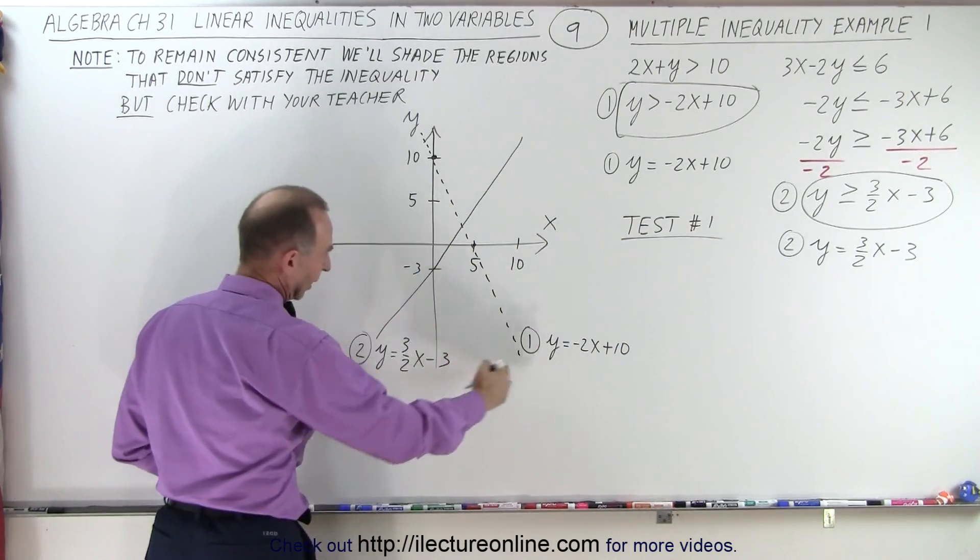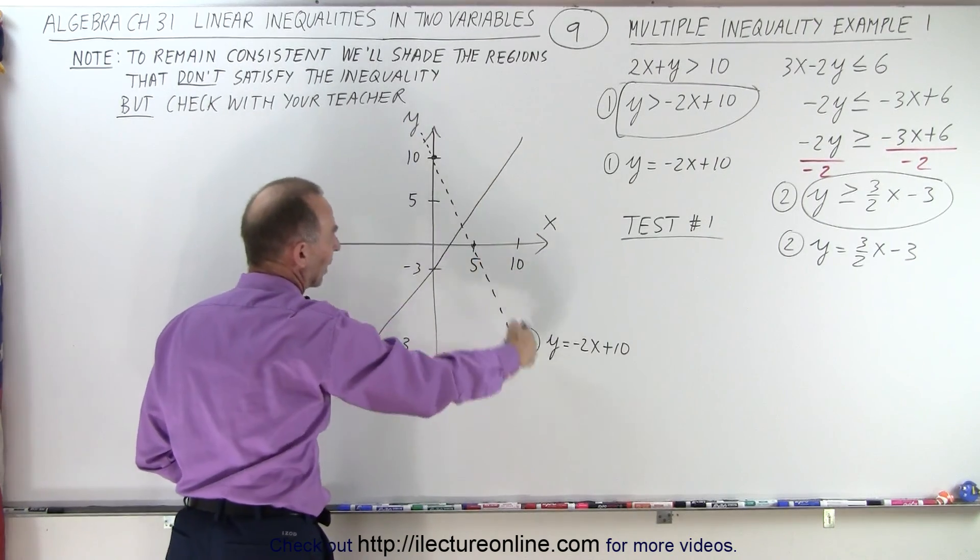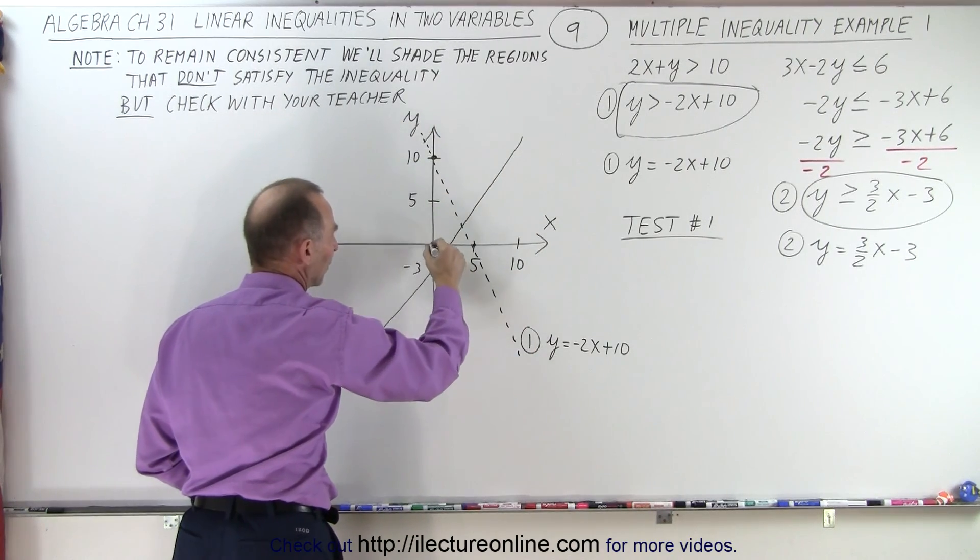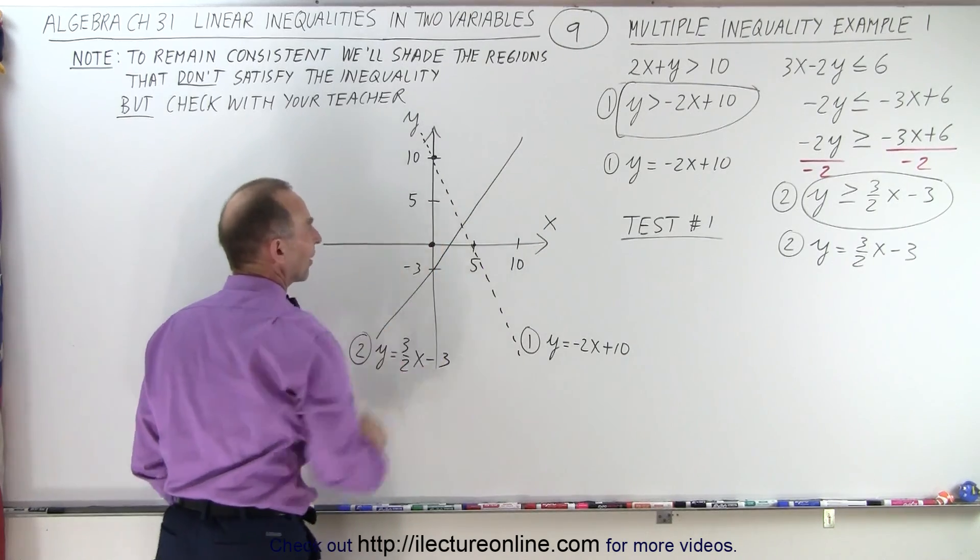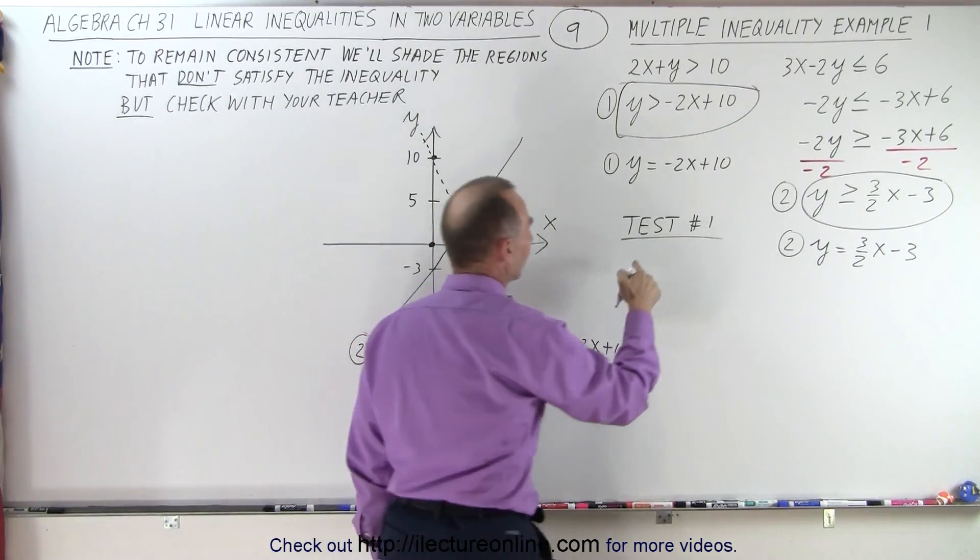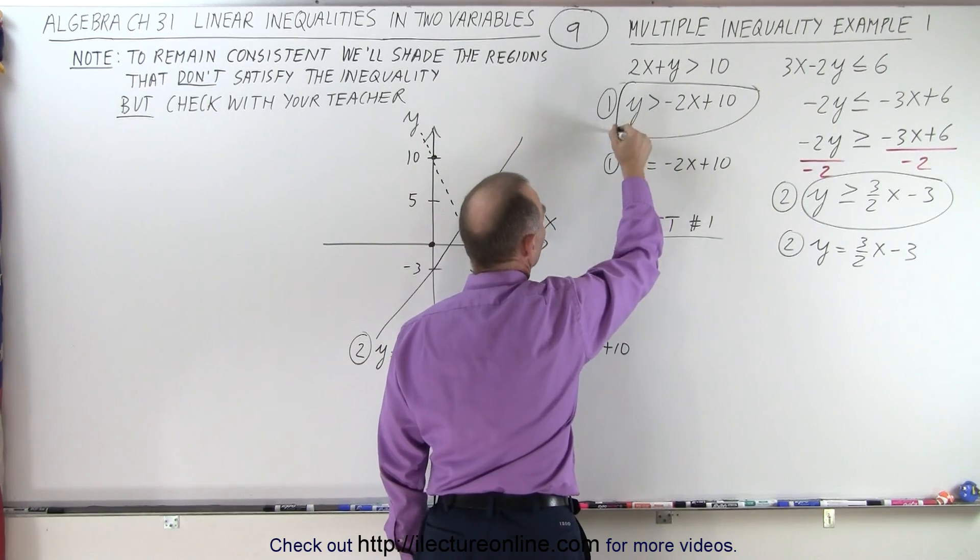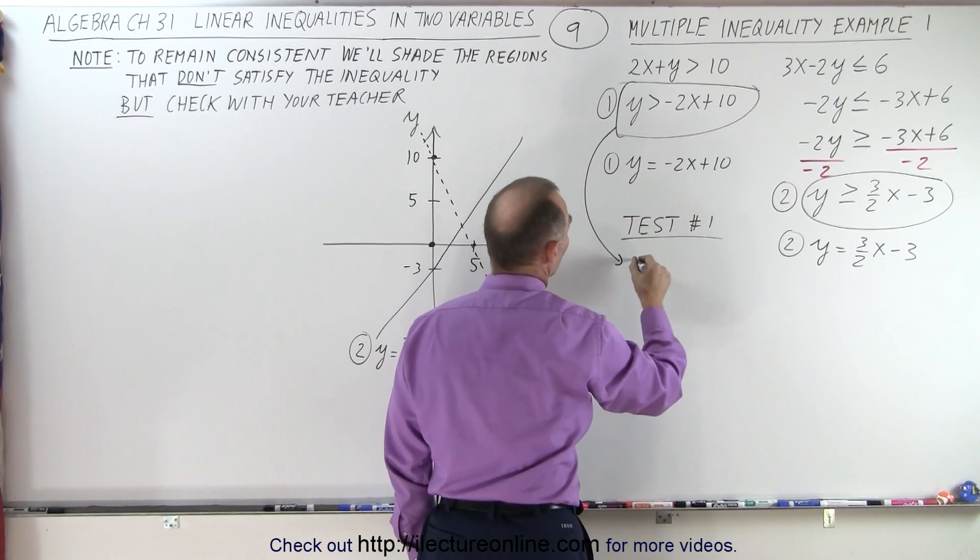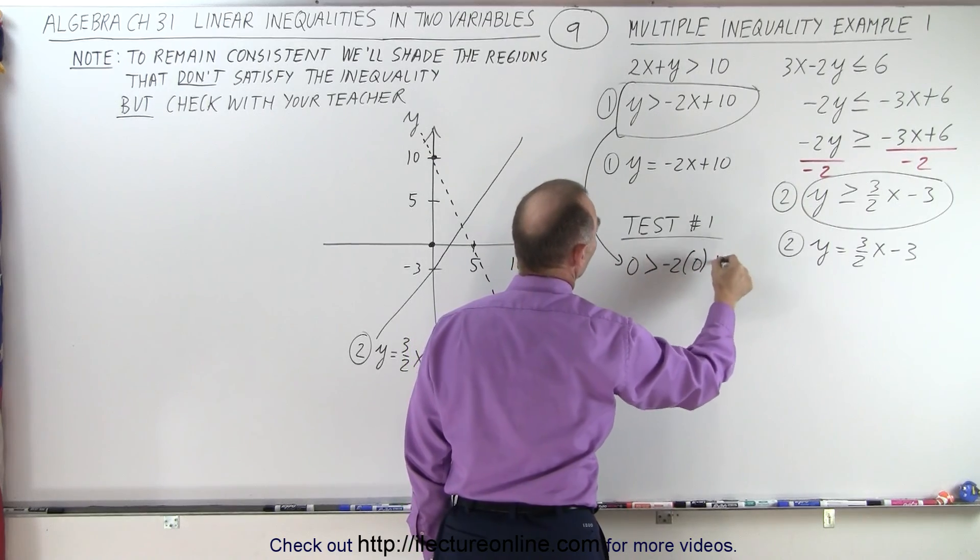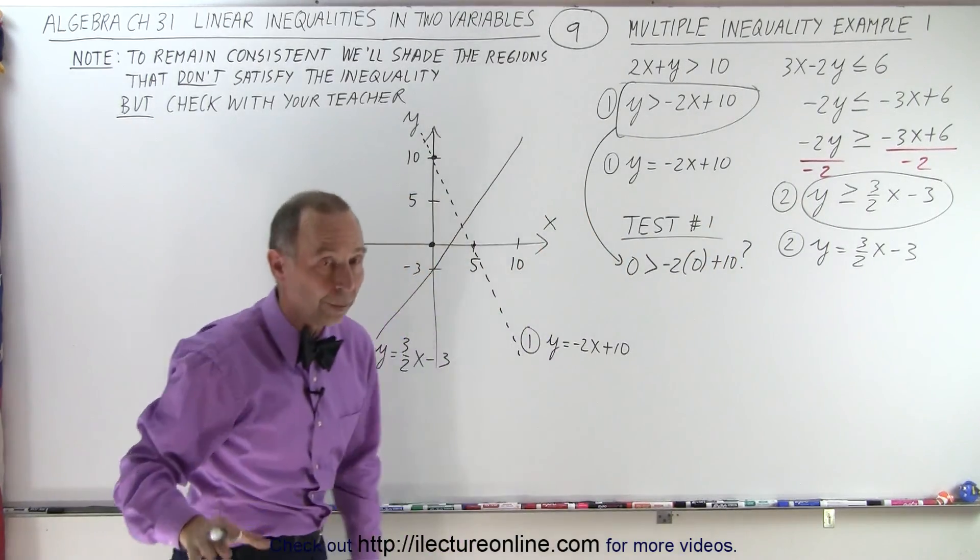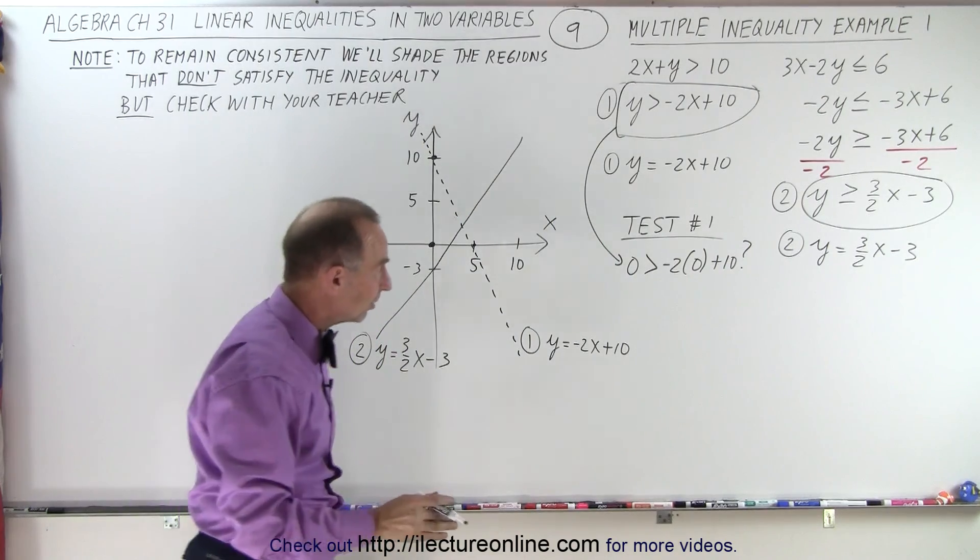Number 1, this is the dashed line. I'm going to pick a test point to see which of the two sides of the dashed line satisfies inequality. We're going to test 0, 0. Taking this equation, we put 0 greater than negative 2 times 0 plus 10, question mark, because we don't know if that's correct or not.